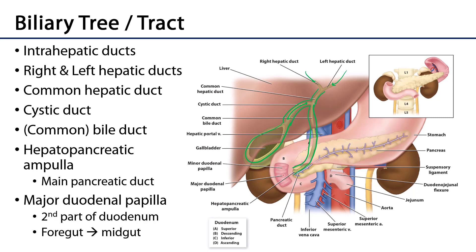The common bile duct comes together with the main pancreatic duct, and there is an expansion of these two known as the hepatopancreatic ampulla. That hepatopancreatic ampulla feeds into an eruption of mucosa within the second part of the duodenum. Bile and pancreatic juice are expelled through that major duodenal papilla, which is an important anatomical landmark — it is what differentiates the foregut from the midgut.